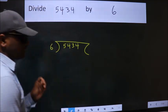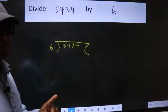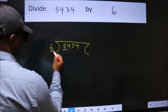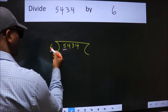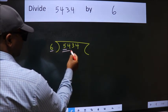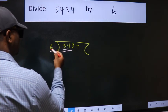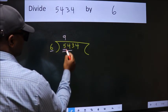This is your step 1. Next, here we have 5, here 6. 5 is smaller than 6, so we should take 2 numbers, 54. When do we get 54 in 6 table? 6 nines 54.